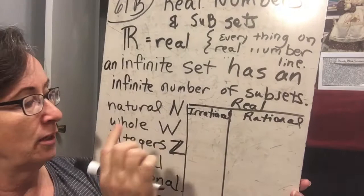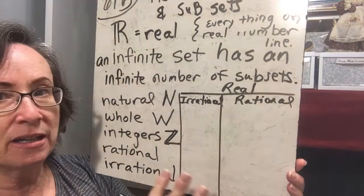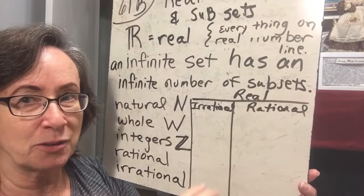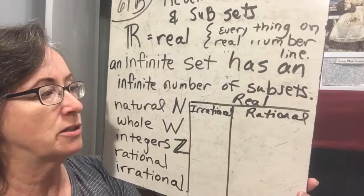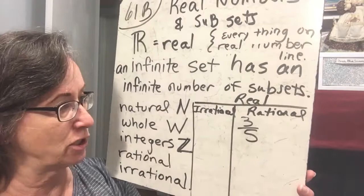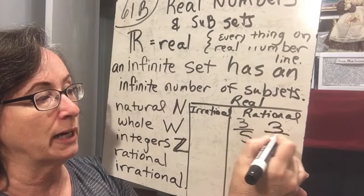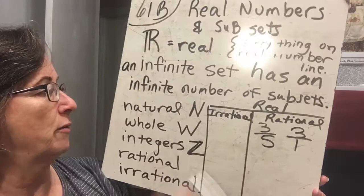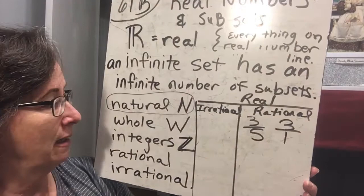Irrational numbers are any numbers that cannot be written as a ratio. Rational numbers are any numbers that can be written as a ratio of two integers. For example, three-fifths would be a rational number because three and five are whole numbers and I can write them as a fraction. Even the number 3 written as 3 over 1 is rational. Natural numbers are represented by N.